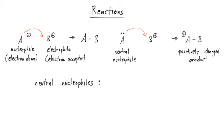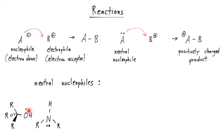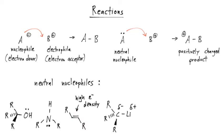It's relatively easy to identify anionic nucleophiles like hydroxide or cyanide, but neutral nucleophiles also exist. Those are often molecules with lone pairs that can donate electron density to form a new bond. Also, pi bonds can act as nucleophilic sites because of the high electron density they have. Additionally, a polarized molecule where you have a partial negative charge on the carbon due to a less electronegative lithium can allow the carbon to act as a nucleophile.